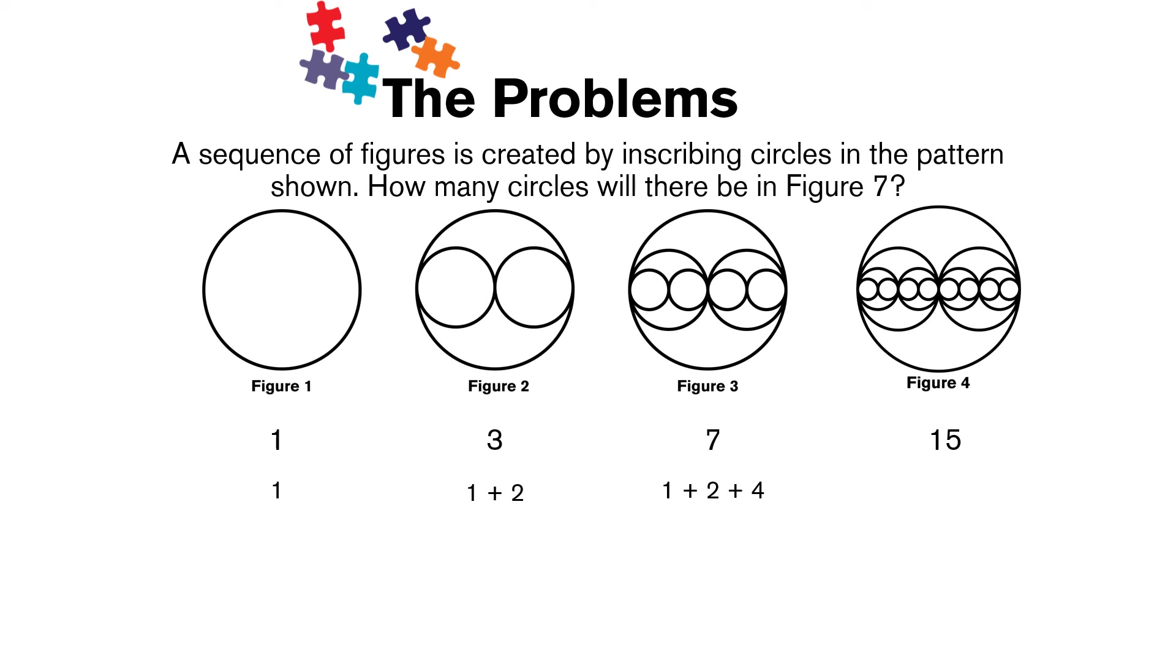Then when we move to figure 4, we look at those 4 small circles and we draw 2 even smaller circles inside each of these, which gives us 8 more circles. So we're adding 1 plus 2 plus 4 plus 8.